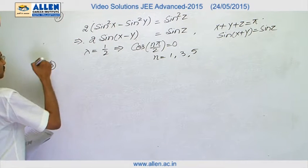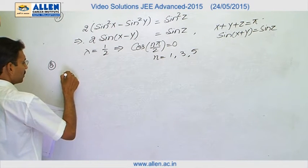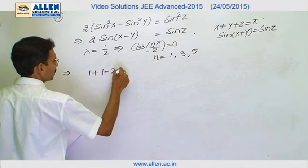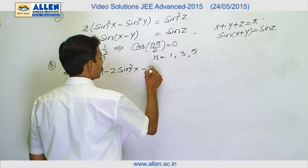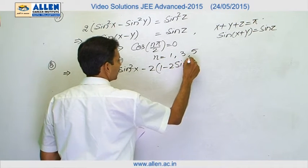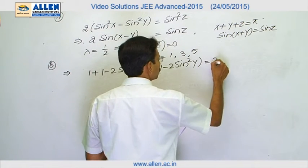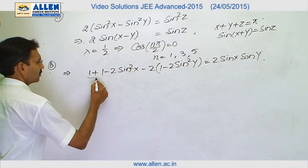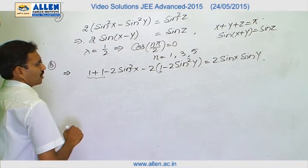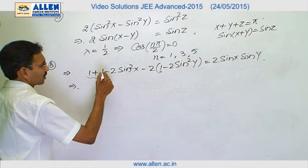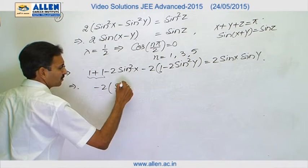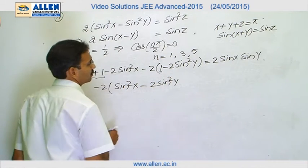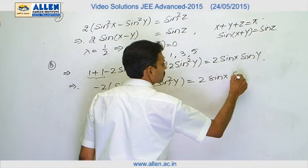Now for part B. We will convert all the expressions: 1 plus cos 2x will be 1 minus 2 sine² x. Then 2 cos 2y, which is 1 minus 2 sine² y, equals 2 sin x sin y. You can see the 2 is cancelled. After cancelling, I will take minus 2 as a common factor, giving sine² x minus 2 sine² y equals 2 sin x sin y.